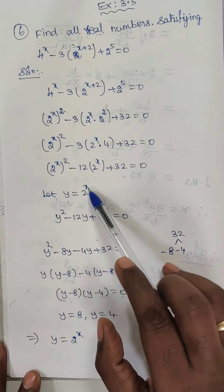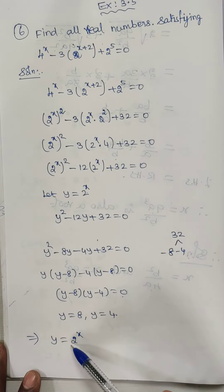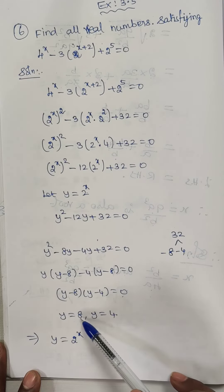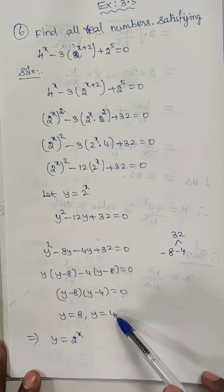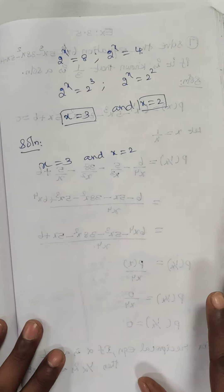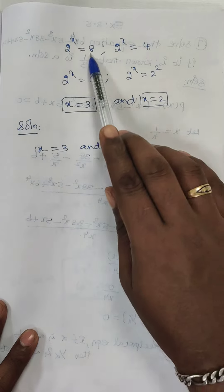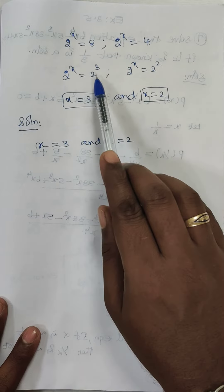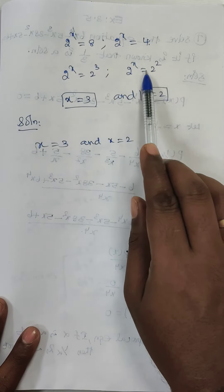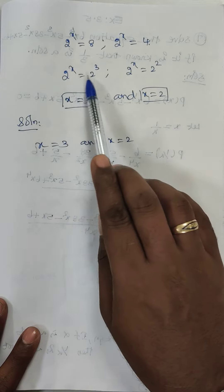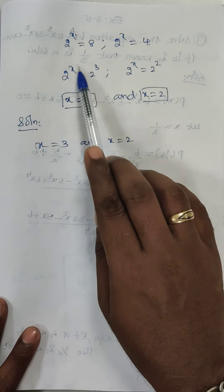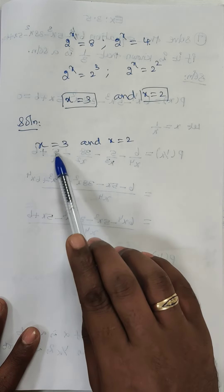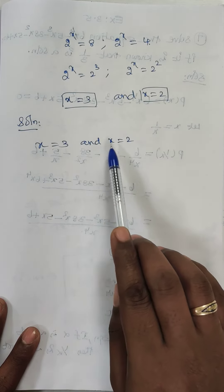Already we know y is equal to 2 power x. Substituting back, 2 power x is equal to 8 and 2 power x is equal to 4. Now 8 is 2 cube and 4 is 2 square. Since the base values are equal, the powers are equal. Therefore x is equal to 3 and x is equal to 2. The solution is x equal to 3 and x equal to 2.